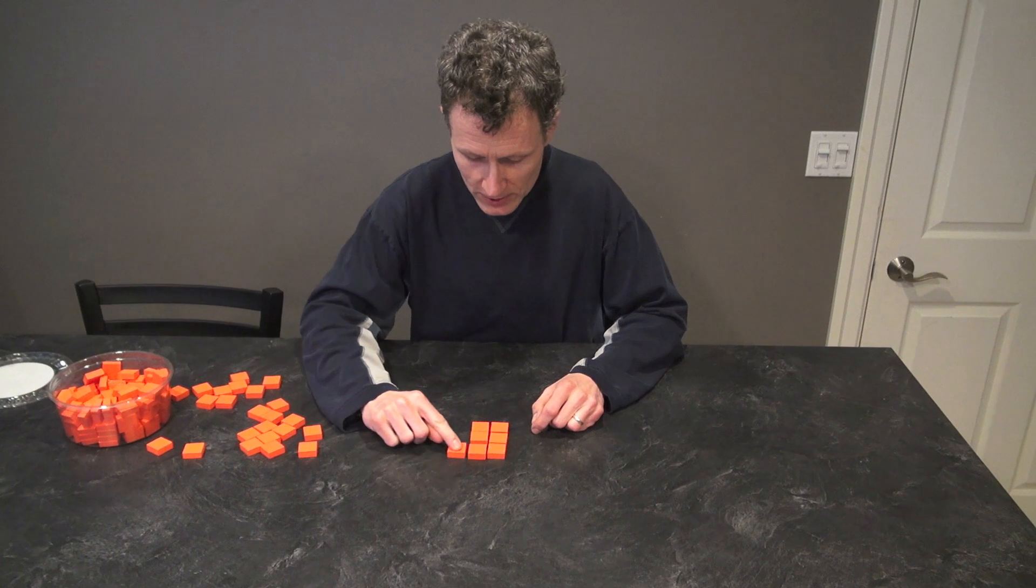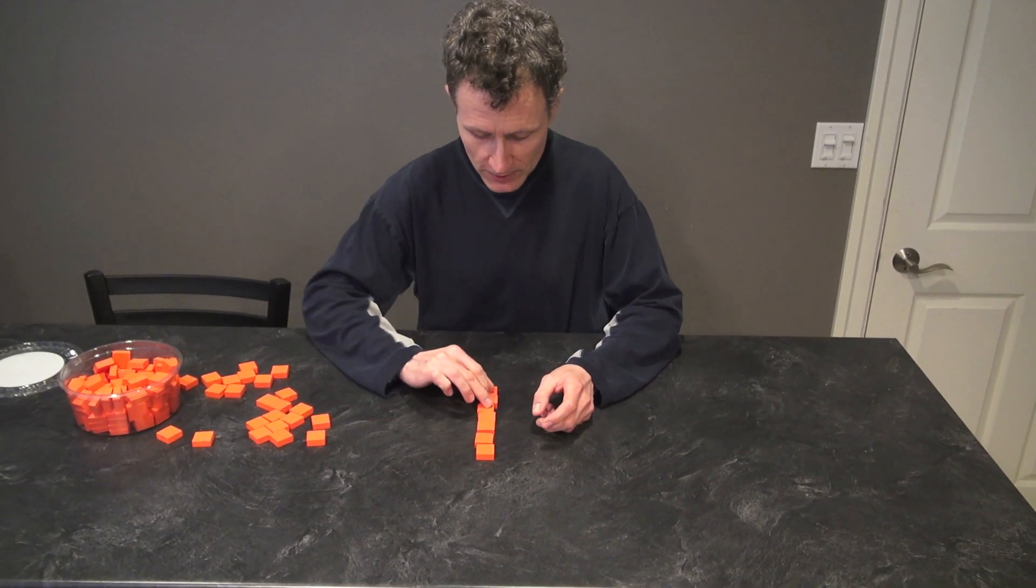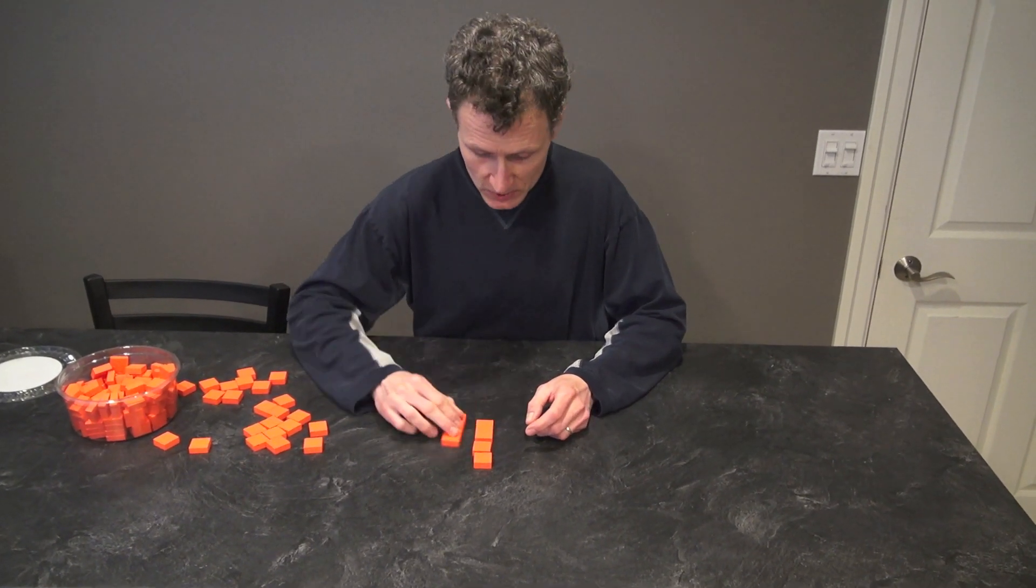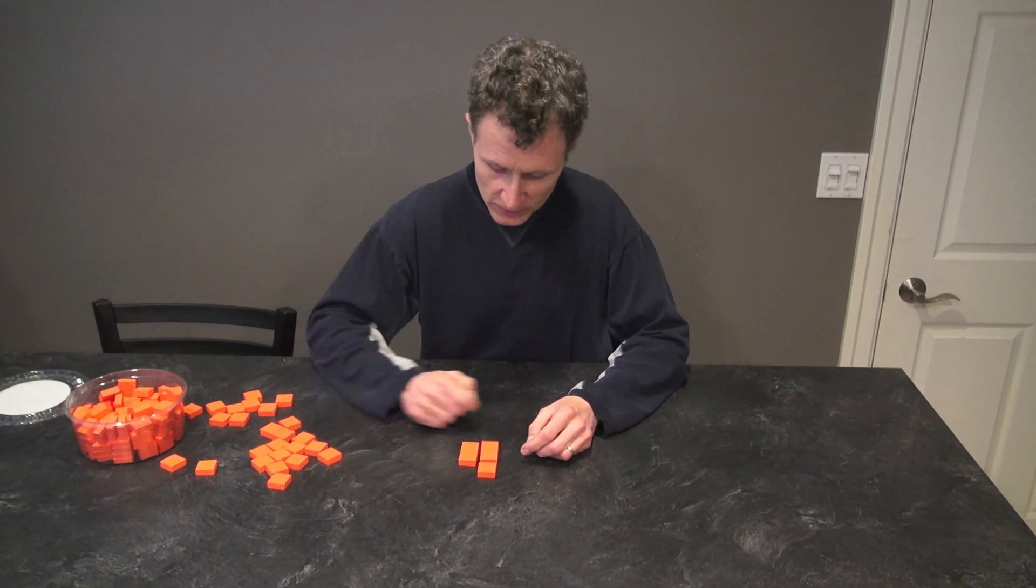If I have seven, well, it's hard to even make a rectangle unless you make a rectangle that's one by seven there. Six. Six isn't a perfect square. Now there's five.